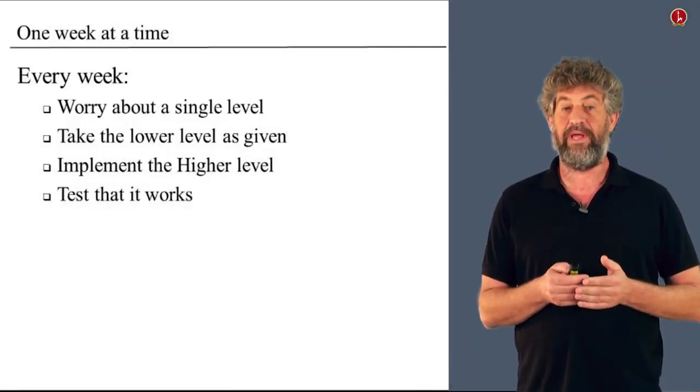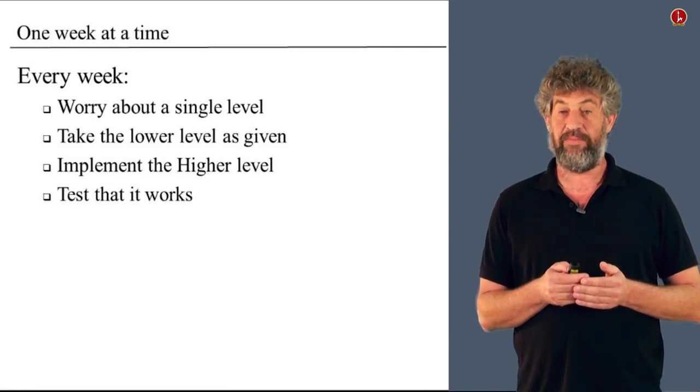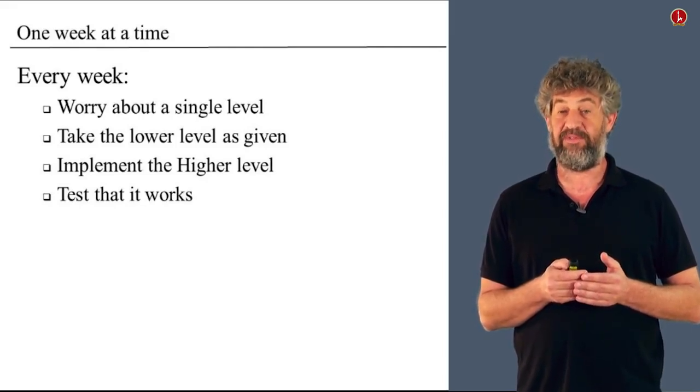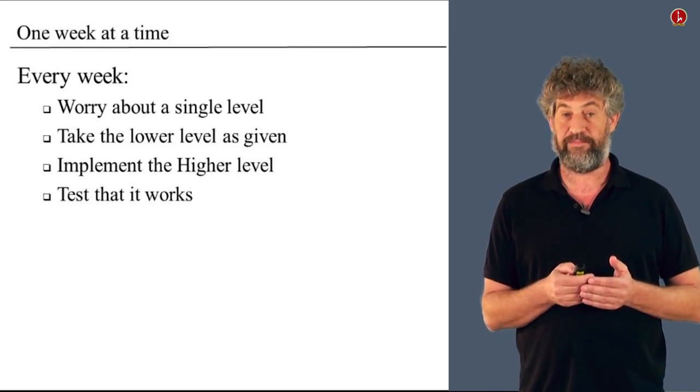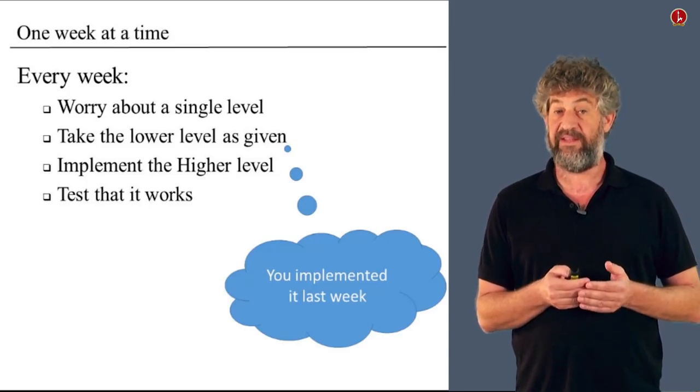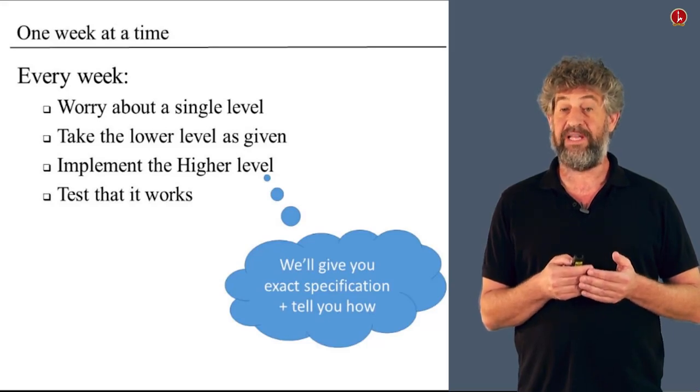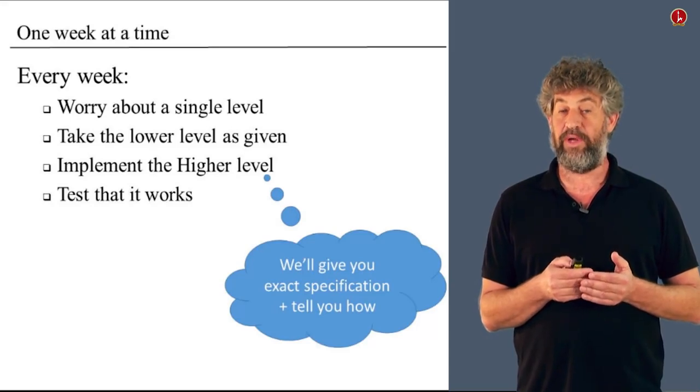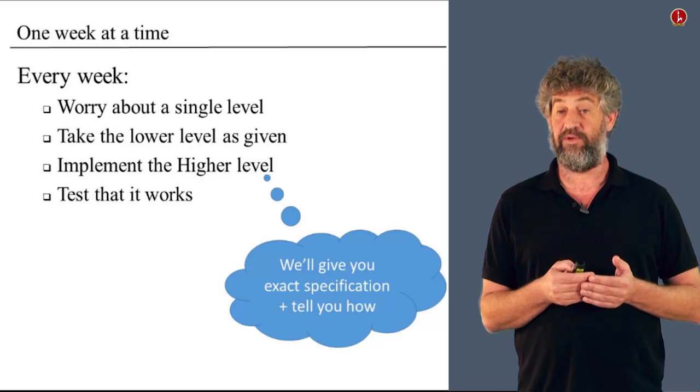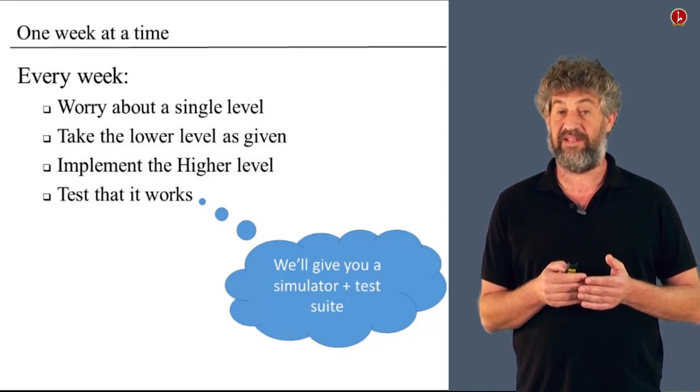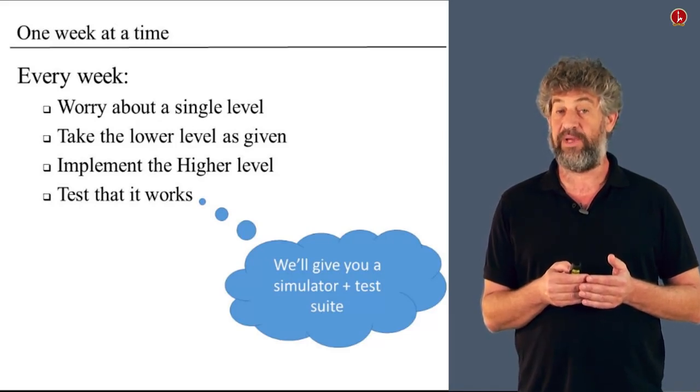Every week, we will worry about a single level of abstraction. We take the lower level as given. We only remember what it does. We forget how we did it. We implement the higher level of abstraction, the next level of abstraction. We test that it works. And then we finish the week. We can move to the next week where we already know that this level works very well. So the lower level we can take as given in the next week because we just finished implementing it. The next level, we are going to actually guide you, give you very explicit guidance how you're going to implement the next level of abstraction, given the fact that you already have the previous one. And then we also give you a testing suite that allows you to really test that what you did this week works so that you can be sure that next week everything will keep on functioning.